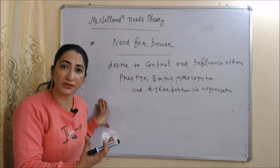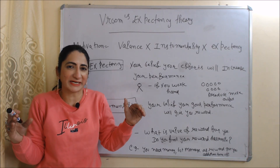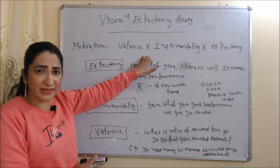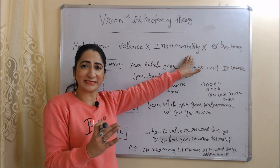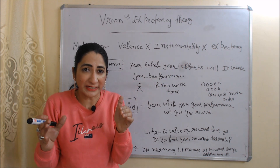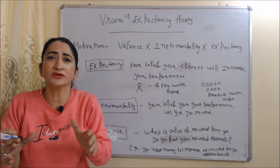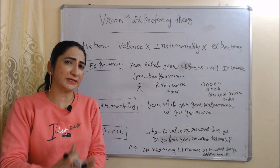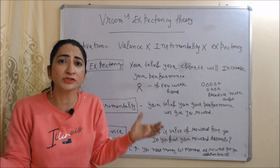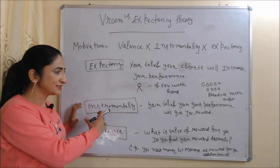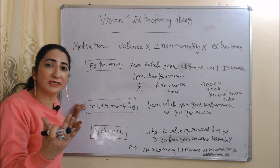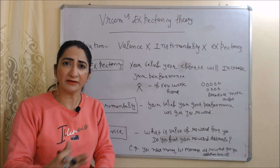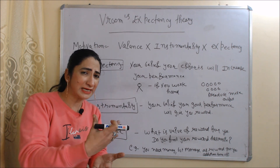Now we will see Vroom's Expectancy Theory. According to this theory, motivation equals valence multiplied by instrumentality multiplied by expectancy. Expectancy is your belief that your efforts can increase your performance — for example, believing that if you work hard, you can produce more output. Instrumentality means your belief that good performance will give you a reward — for example, that performing well will increase your salary or earn you a bonus.